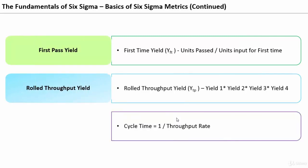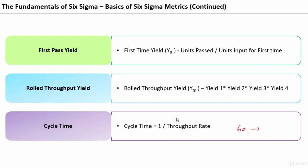The first time yield is the units that pass divided by units input for the first time — whatever goods pass for the first time without any rework. To calculate the rolled throughput yield for a process having multiple steps, we multiply the yield of the individual sub-processes. The cycle time can be calculated as 1 divided by the throughput rate. For example, if on average you are producing 60 insurance policies every hour, then cycle time equals 1 divided by 60 per hour, meaning we should get one insurance policy per minute. We call that the cycle time.